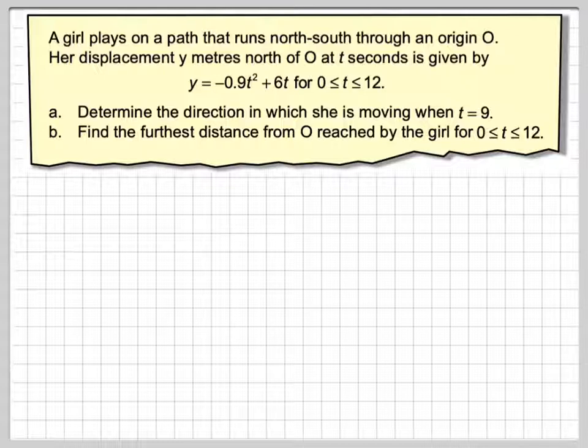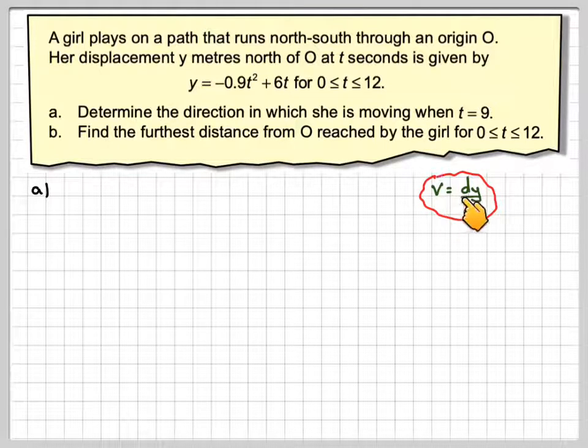In order to find the direction the girl is moving, you need to find the velocity function. So the velocity function will be the derivative of this one, which is dy/dt.